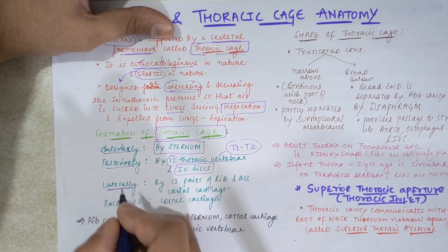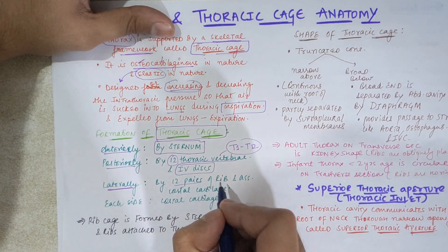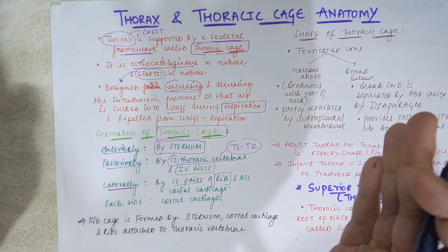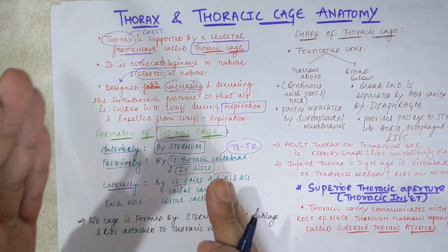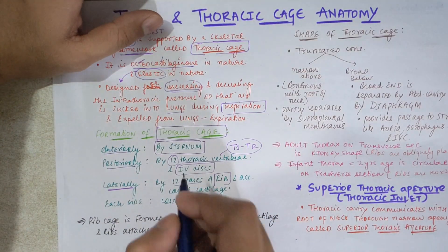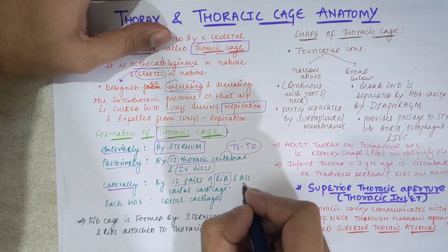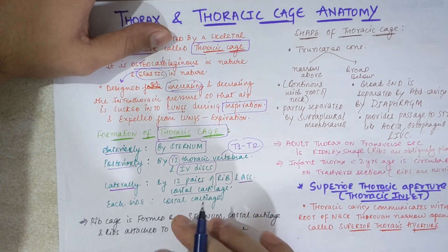Then we talk about the lateral part. Laterally, the ribs form the sides of the thoracic cavity. The sternum is the anterior part, and the thoracic vertebrae form the posterior part.